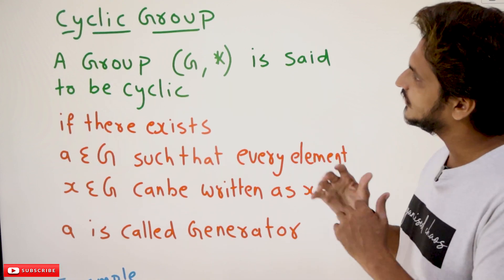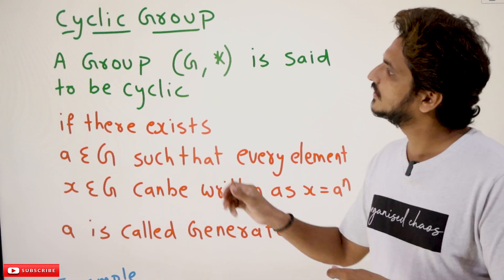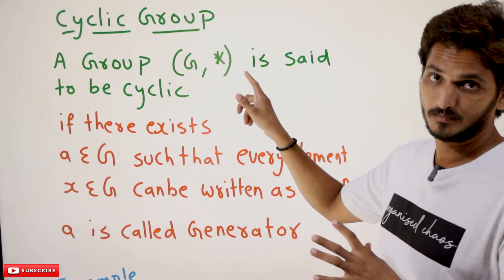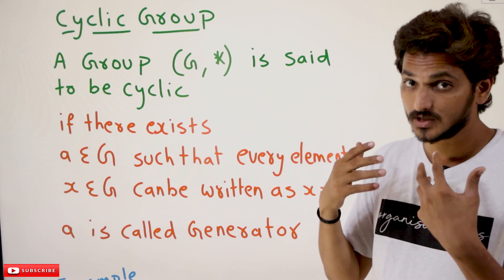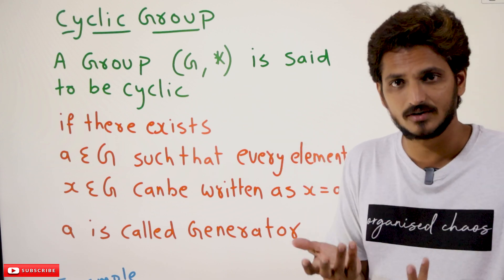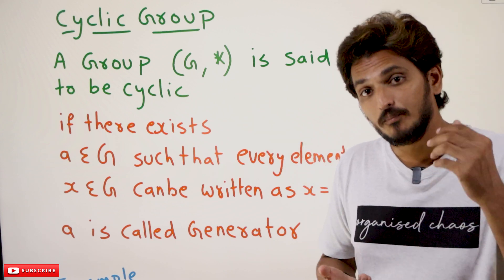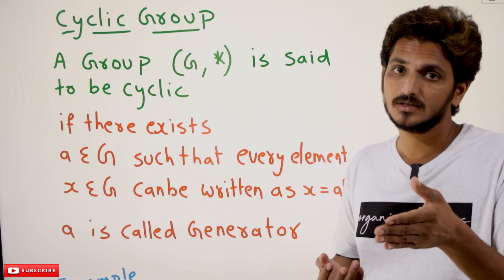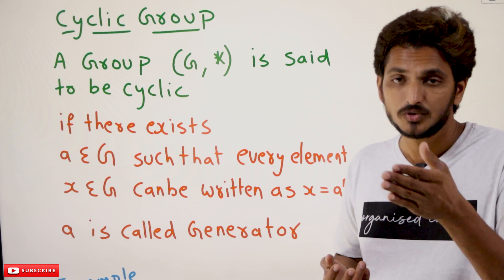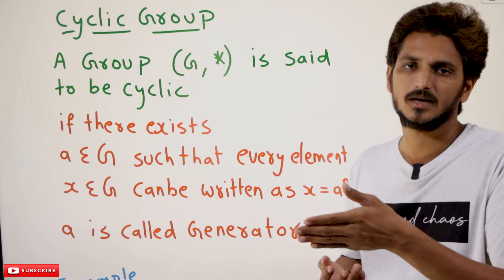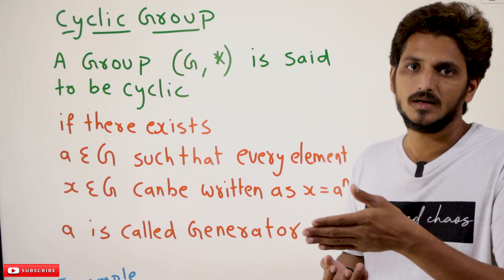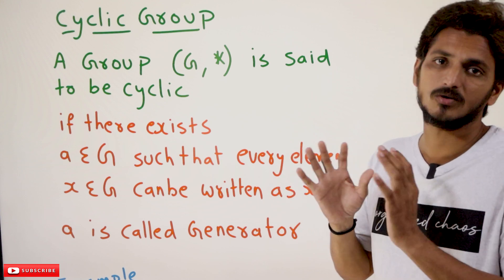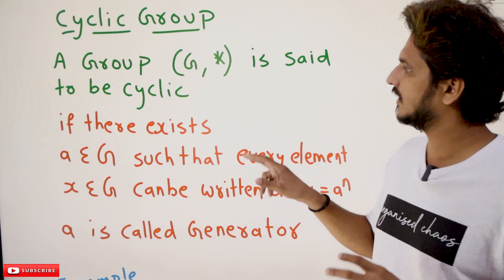Now coming to the definition: a group G star — if you want to check for a cyclic group, before that it should first be a group. Then only you need to check whether it is a cyclic group or not.